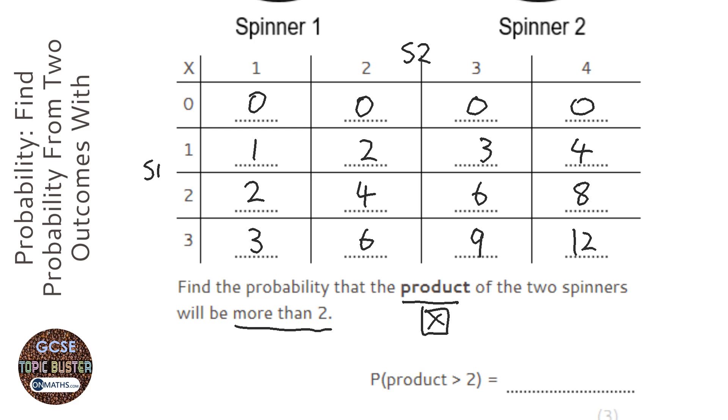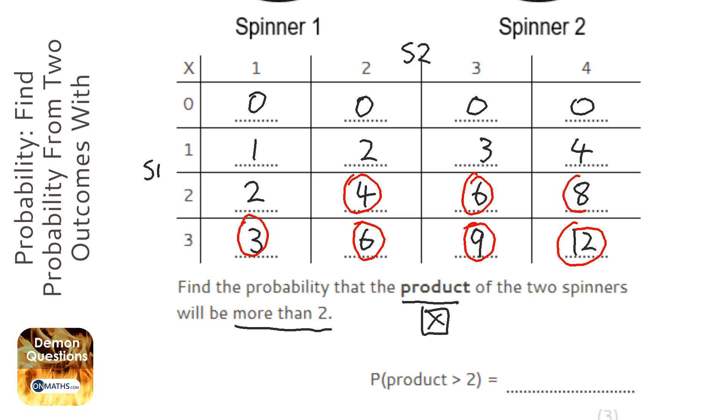And what I'm going to do is show all the ones that are more than two. So one, two, three, four, five, six, seven, eight, nine. So nine of them are more than two.